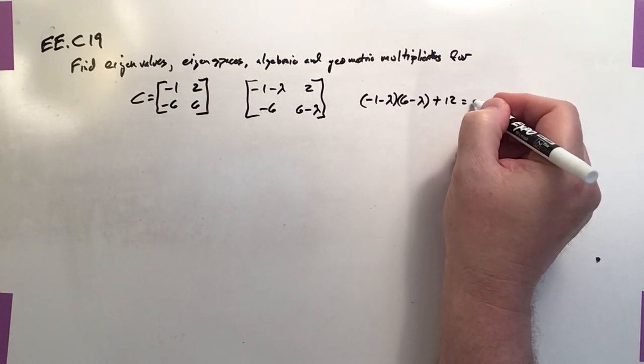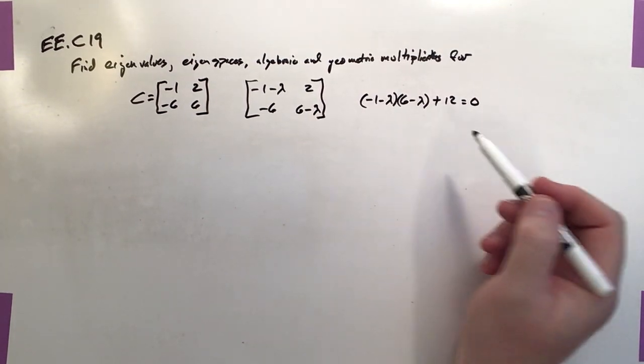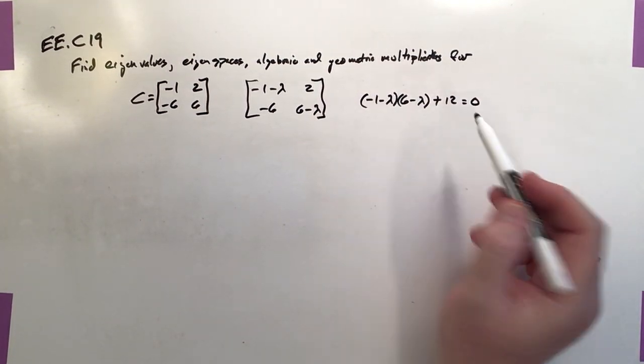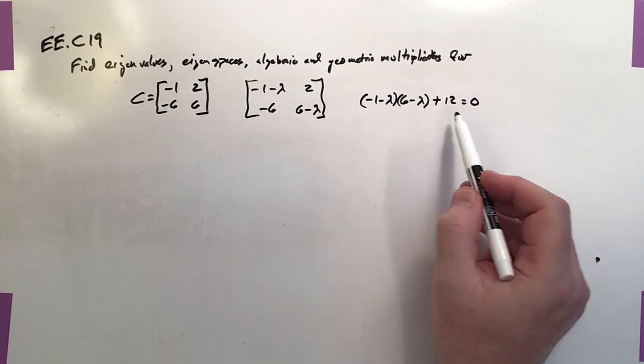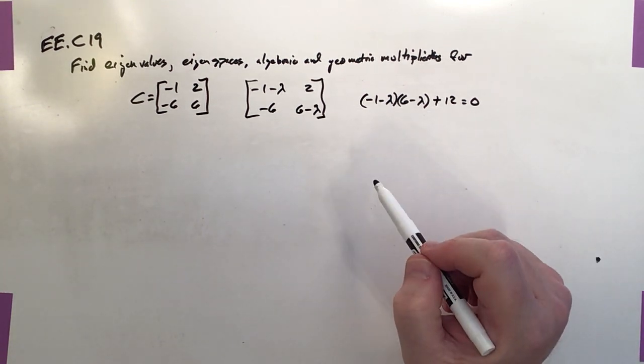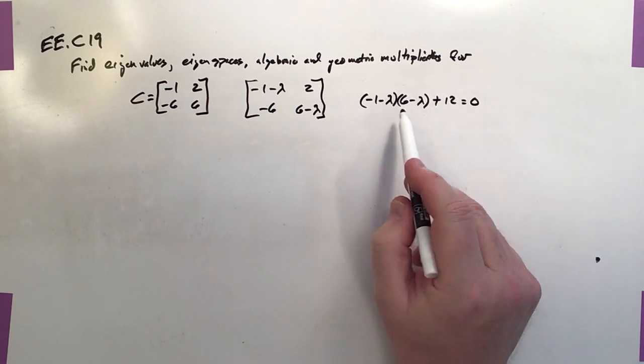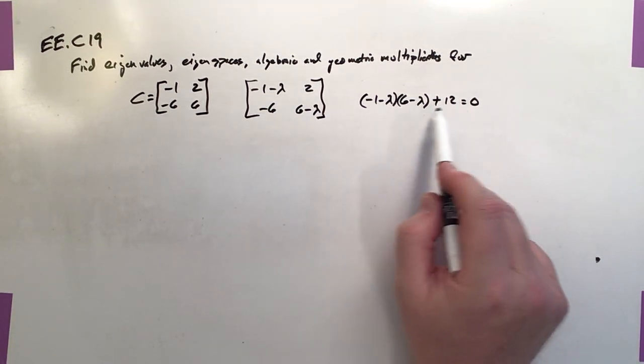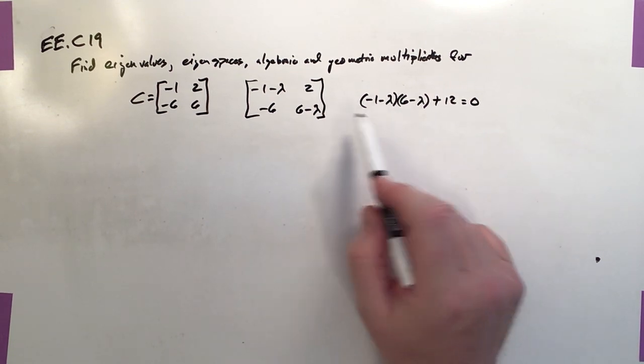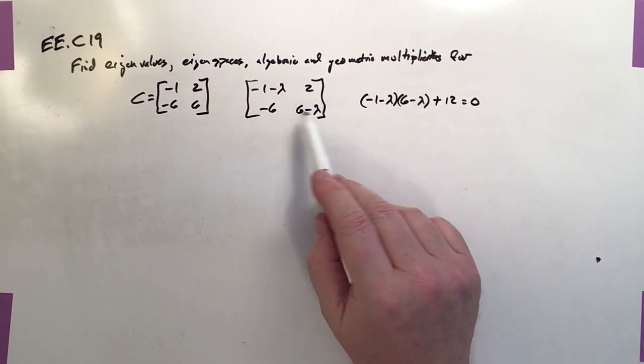And then we'll set this equal to 0 because we're actually looking for the eigenvalues now, so we don't just want the characteristic polynomial. We want to solve for the roots of that equation. And of course, the reason for that is this is the determinant of this matrix, and when the determinant is equal to 0, the characteristic polynomial is indicative of the eigenvalues.